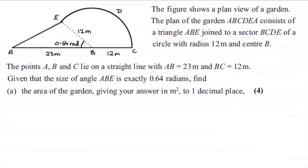Hi there. Now for this question we're given that this figure here shows a plan view of a garden. The plan of the garden ABCDE consists of a triangle ABE joined to a sector BCDE of a circle with radius of 12 metres and a centre at B.